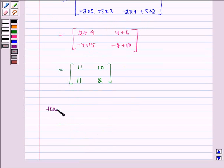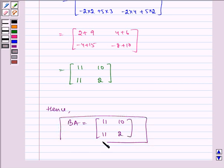So hence, BA is equal to 11, 10, 11, 2, which is the required matrix and our answer. I hope you understood the question. Bye and have a nice day.